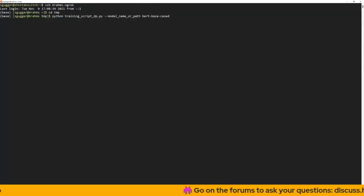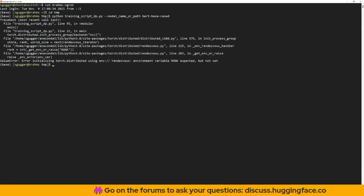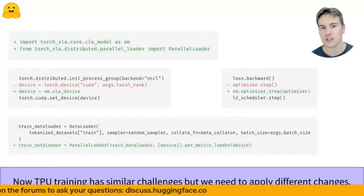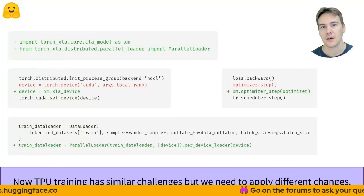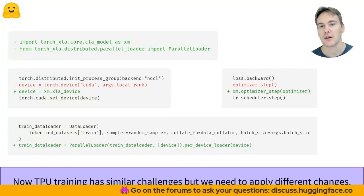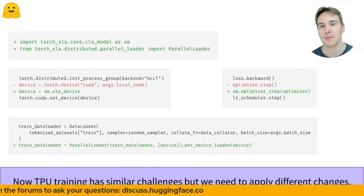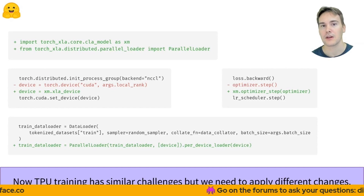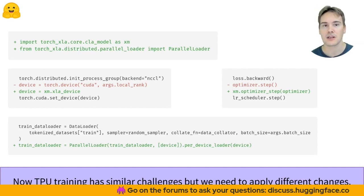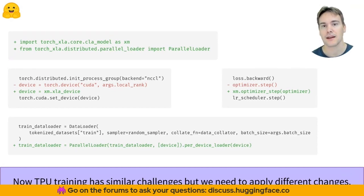But note that if we try to execute it like a regular Python script it will fail. If we want to train on TPUs, we'll need additional changes compared to the distributed training on several GPUs. The device changes, we need to wrap the training data loader in some parallel loader, and there's a change in the optimizer.step line which needs to become xm.optimizer_step optimizer. Launching the script with the distributed launcher we saw before would then fail. We need a special launcher for TPUs. And of course, launching the script like a regular Python script fails again.